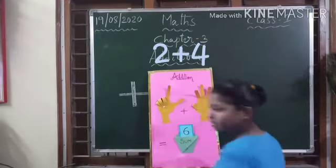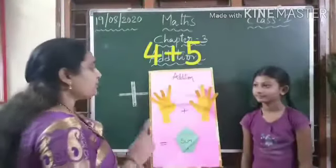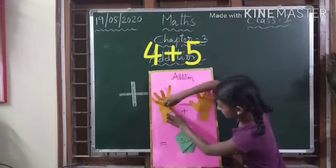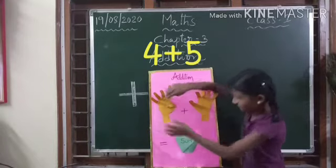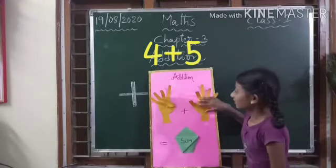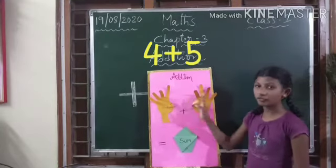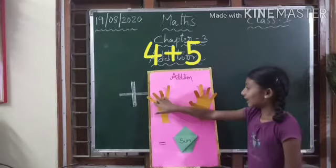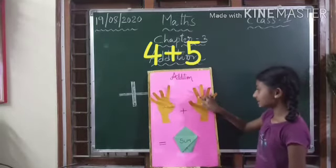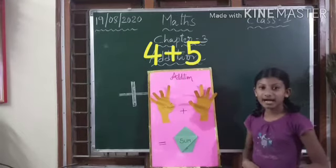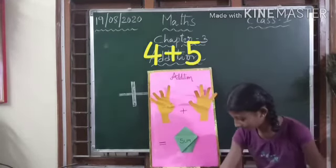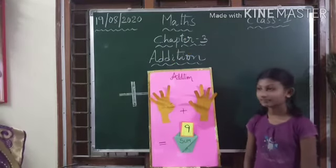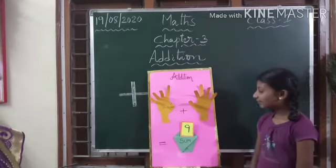Tithi, do the problem four plus five. In this hand we have four and in this hand we have five. Let's count: one, two, three, four, five, six, seven, eight, nine. We have a total of nine. So four plus five equals nine. Repeat it once again — four plus five is equals to nine.